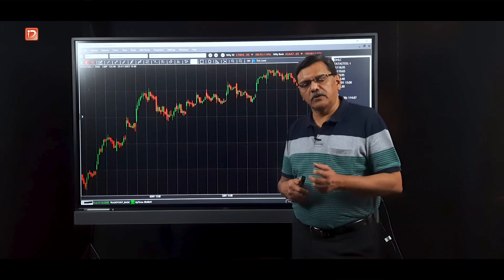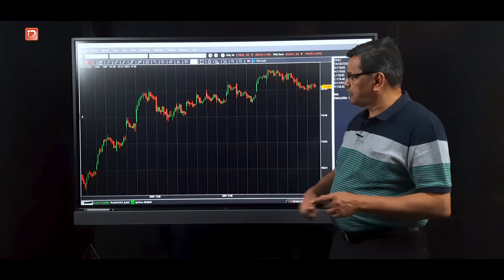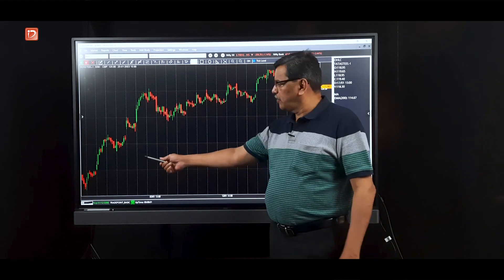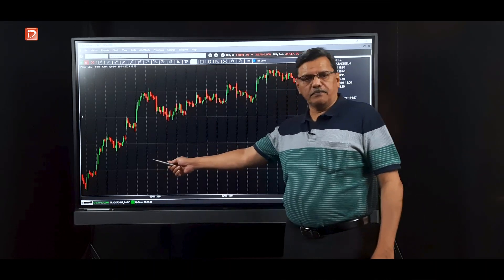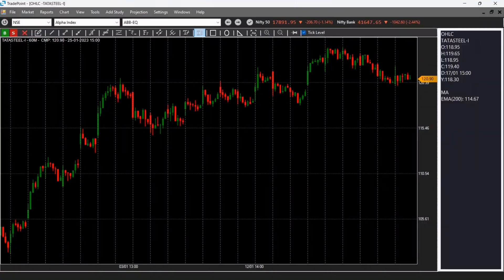Or in other words we talk about the put call ratio at that strike price. So the classic example which happened in January was Tata Steel. Tata Steel, if you look at the chart right from the beginning of January expiry, was very bullish. In fact, this is a bullish chart all the way from starting of January.